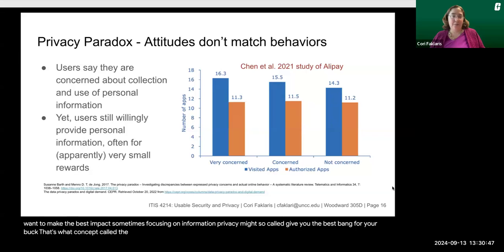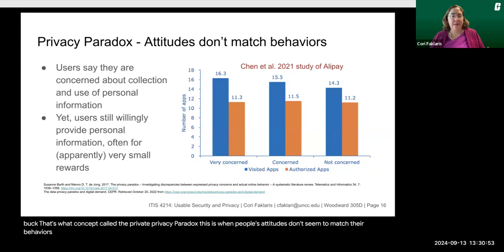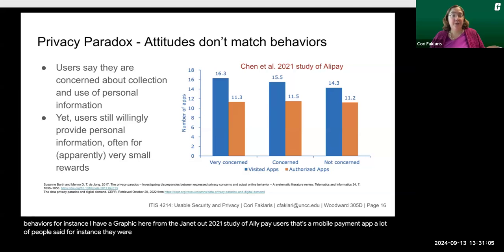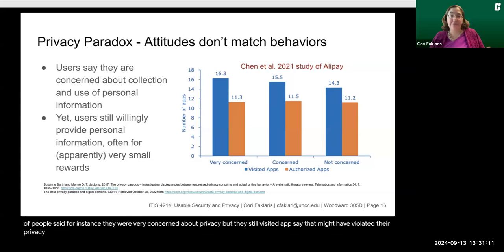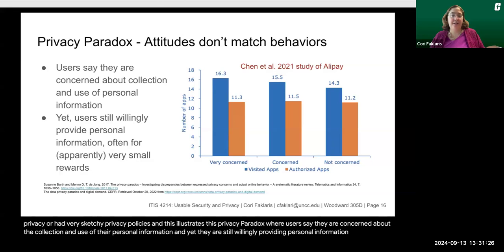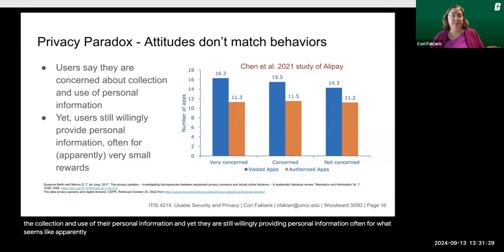There's also a concept called the privacy paradox. This is when people's attitudes don't seem to match their behaviors. For instance, in a graphic from the Chen et al. 2021 study of Alipay users — a mobile payment app — many people said they were very concerned about privacy, but they still visited apps that may have violated their privacy or had very sketchy privacy policies. This illustrates the privacy paradox, where users say they are concerned about the collection and use of their personal information, and yet they are still willingly providing personal information, often for apparently very small rewards.